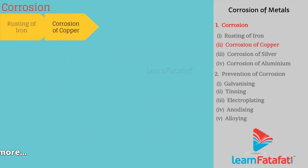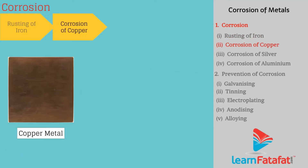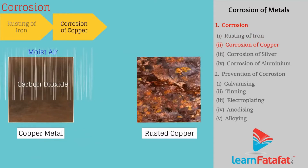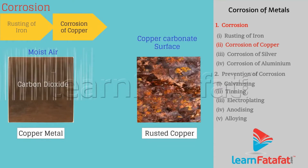Corrosion of Copper: Copper metal reacts with moist carbon dioxide and air, and loses its shine. It forms a green coating of copper carbonate on its surface.